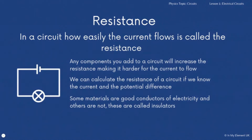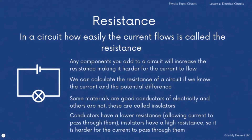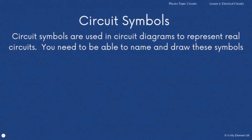Some materials are good conductors of electricity and others are not — the ones that aren't good conductors are known as insulators. Conductors will have a lower resistance, so the current will flow through them more easily. But an insulator will have a higher resistance, so it's much harder for the current to pass through that material. So you've looked at current, potential difference, and resistance all within an electrical circuit. What you need to be able to do now is draw and represent that electrical circuit in the form of circuit diagrams using circuit symbols.